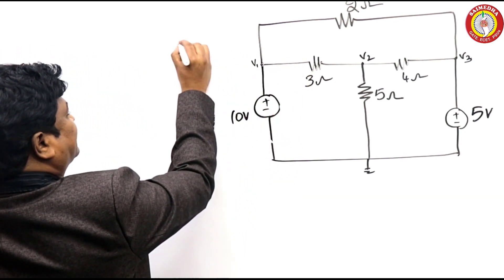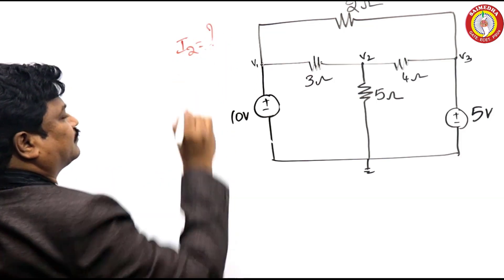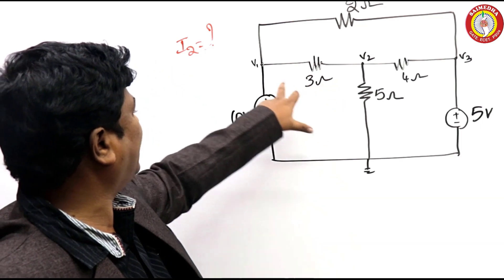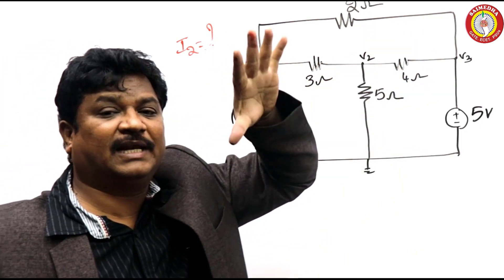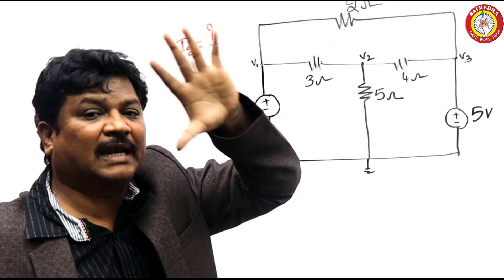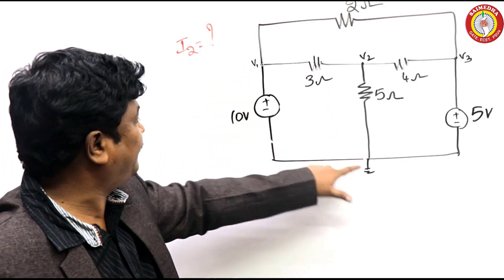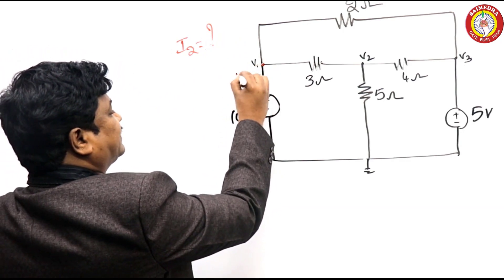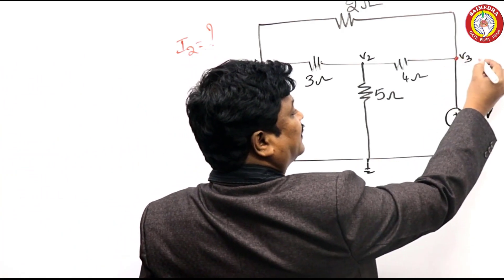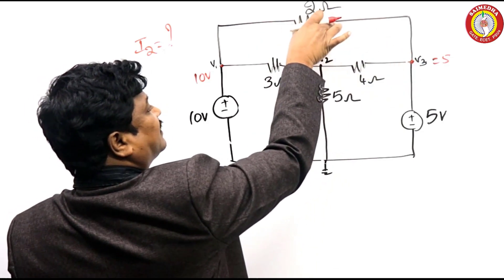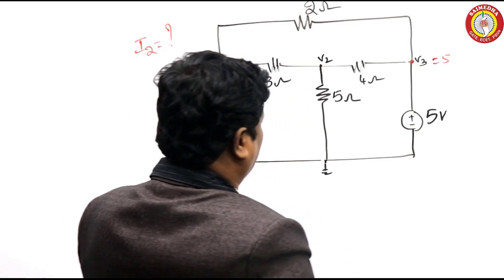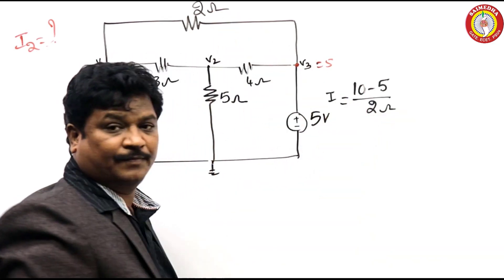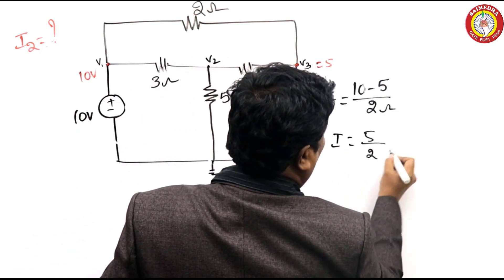You see this problem given. What is the requirement? What is the current passing through 2 ohms? Suppose 2 ohms resistance is here - what is the current, how many amperes? Most of the cases, if the problem looks like this with v1, v2, v3, students approach using nodal analysis, which is sometimes unnecessary. Observe: this is a ground terminal, zero potential. V1 is an ideal voltage source with no internal drop, so the potential here is 10 volts. Similarly, this is also an ideal voltage source at 5 volts. The resistance is between these two. Hence the potential difference is 10 minus 5, so i equals (10 - 5)/2 ohms, giving i equals 5/2 amperes.